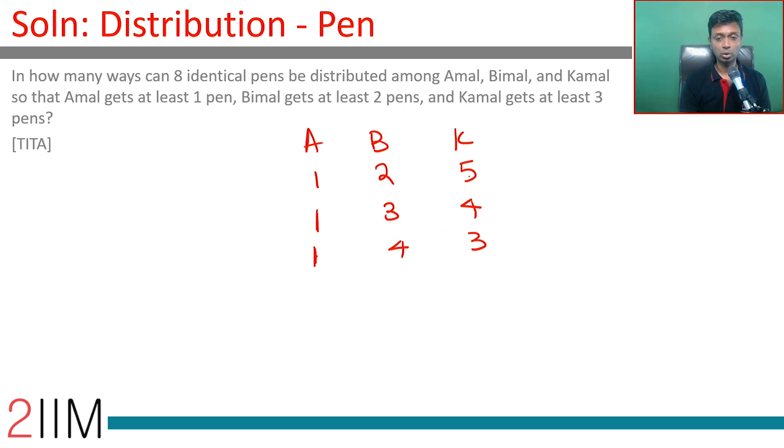We cannot have 1, 2, 5. We can have 1, 3, 4; 1, 4, 3. These 3 possibilities exist with Amal getting 1. We cannot have 5 for Bimal. Then Kamal will have only 2. That's not possible.